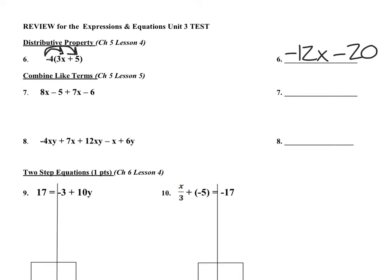Now number 7, combining like terms. I have 8x and 7x, those are alike, and then I have negative 5 and negative 6. So together, 8 plus 7x is 15x, and negative 5 minus a negative 6 makes negative 11, so I have 15x minus 11.